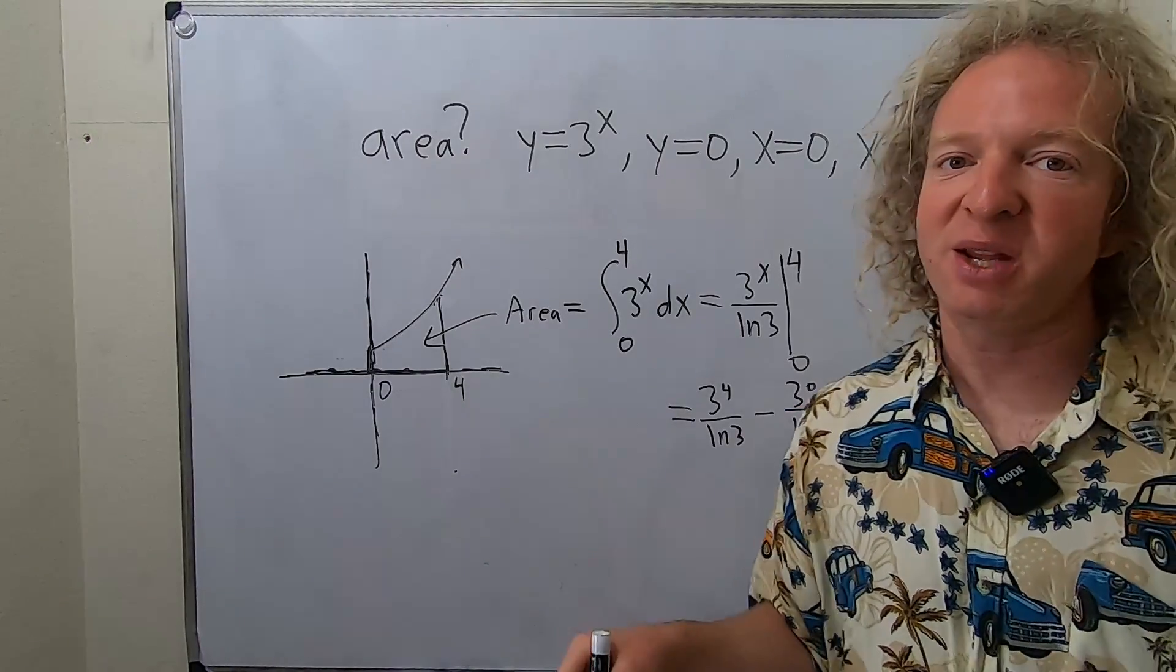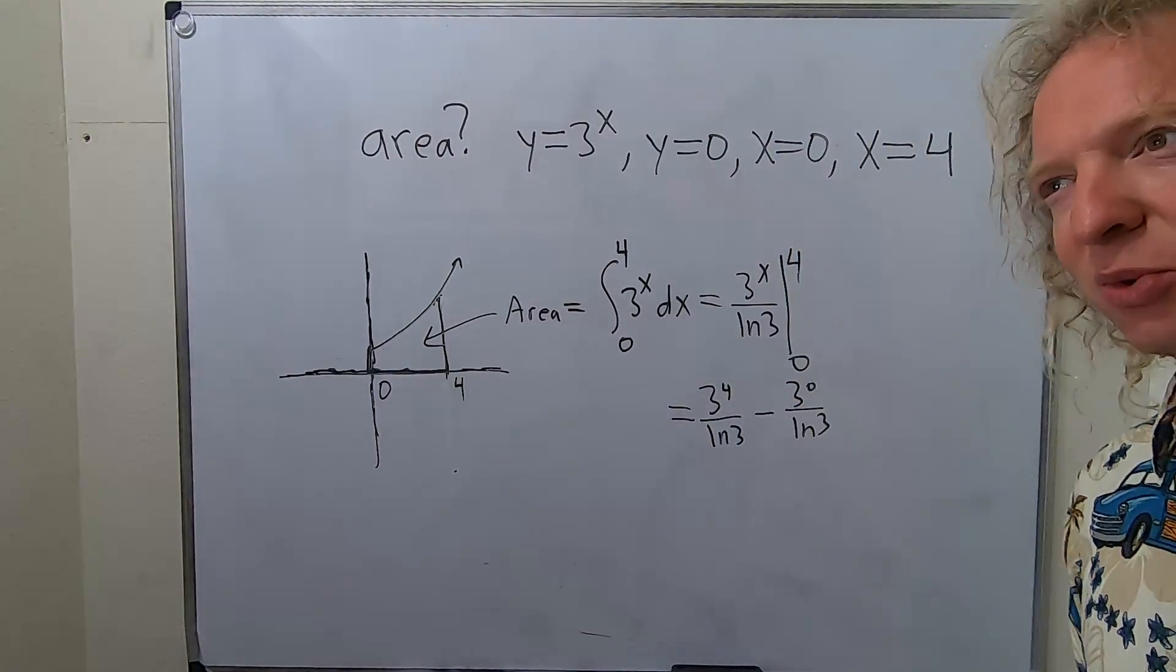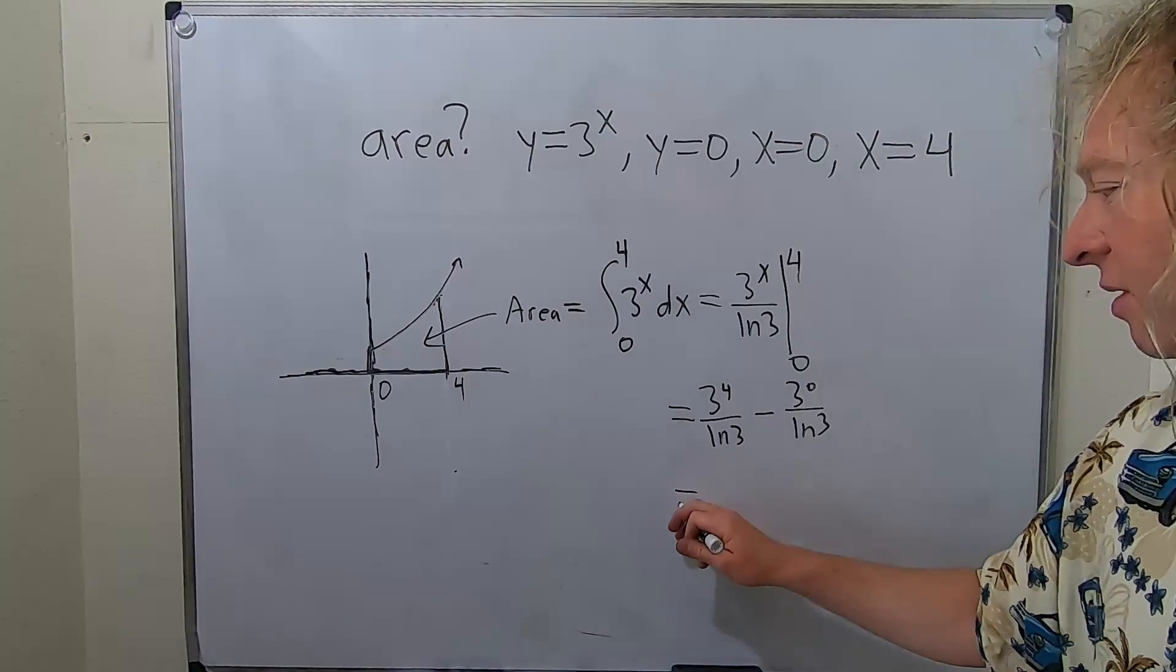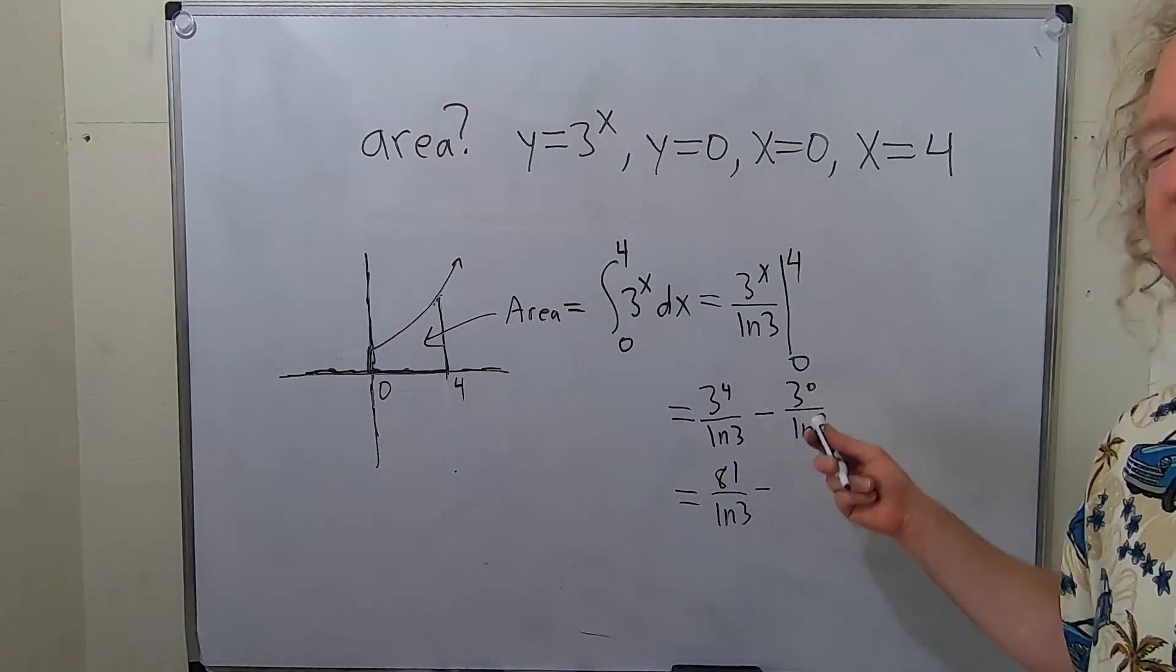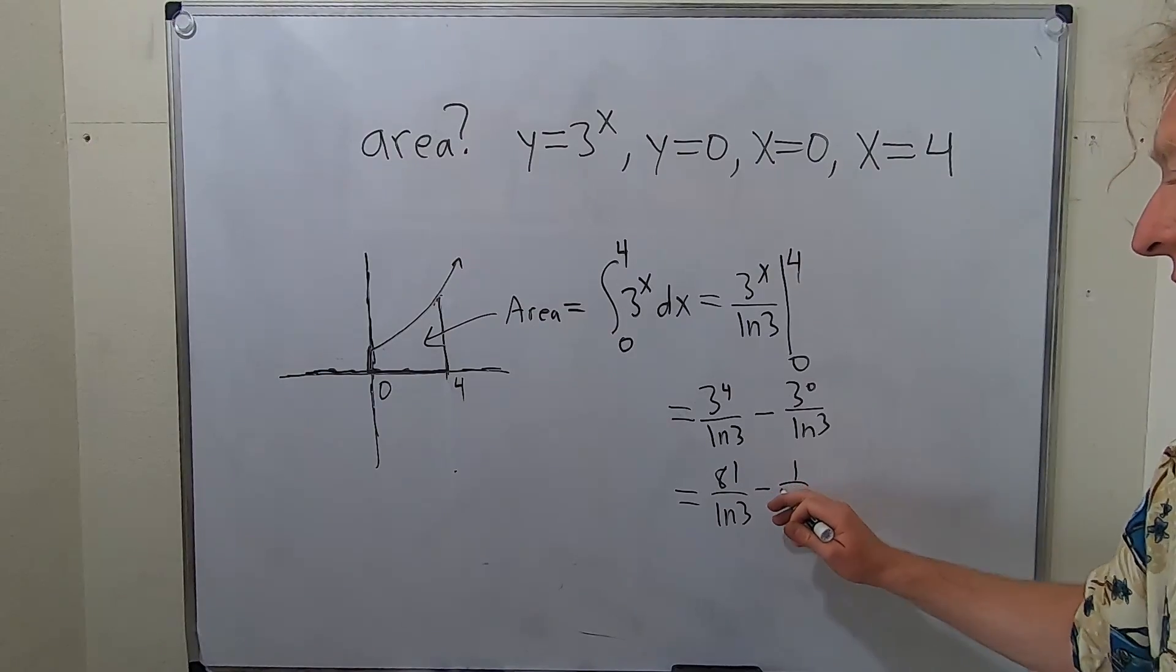3 to the 4th is 81 because it's 3 squared times 3 squared, so it's 9 times 9. This is 81 natural log of 3 minus, and then 3 to the 0 is 1, so this is 1 over natural log of 3.